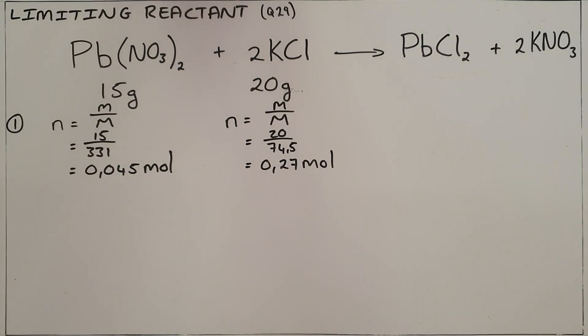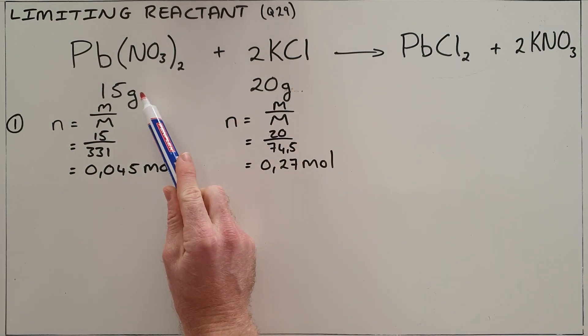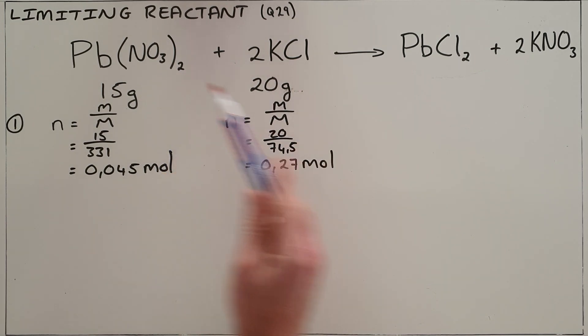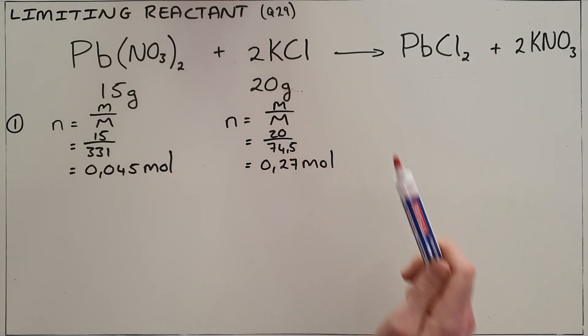The limiting reactant is the reactant in a reaction that would get used up first and as a result stop the chemical reaction from proceeding. In a typical example, you would be given quantities of both reactants. In this example, we've been given 15 grams of lead nitrate and 20 grams of potassium chloride and asked to determine